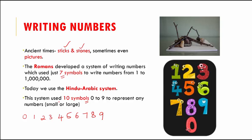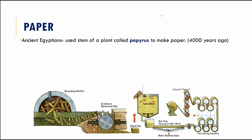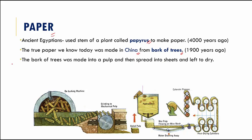To record writing, people also needed something to write on — and that was paper. Ancient Egyptians used the stem of a plant called papyrus to make paper nearly four thousand years ago. This is why we have the word 'paper' — it was derived from the word 'papyrus'. The first true paper we know today was made in China from the bark of trees, nearly one thousand nine hundred years ago.